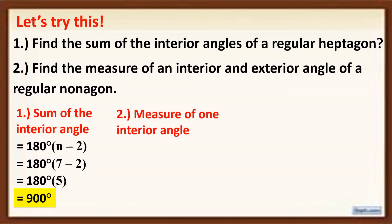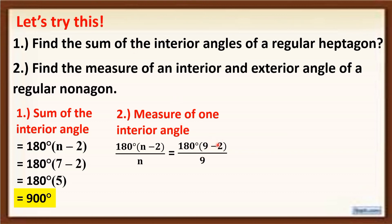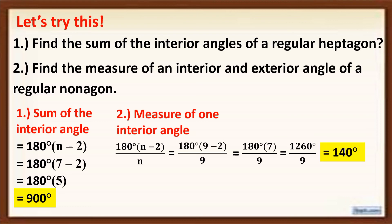Now let us answer question number 2. To get the measure of one interior angle of a regular nonagon, we use the formula 180 degrees times (n minus 2) all over n. A nonagon has 9 sides, so we substitute 9 for n. It becomes 180 degrees times (9 minus 2) all over 9. Simplifying: 9 minus 2 equals 7, so 180 degrees times 7 equals 1260 degrees all over 9. Simplifying 1260 degrees divided by 9 gives 140 degrees. Therefore, the measure of one interior angle of a regular nonagon is 140 degrees.